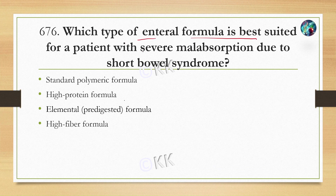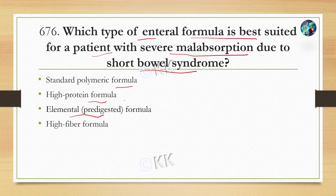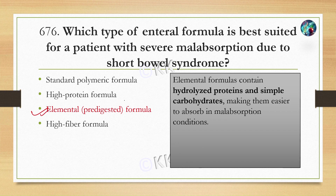Which type of enteral formula is best suited for a patient with severe malabsorption due to short bowel syndrome? Option A, standard polymeric formula. Option B, high protein formula. Option C, elemental pre-digested formula. Option D, high fiber formula. Correct option है elemental pre-digested formula। Pre-digested formula जैसे MLS, amylopectin — इसमें hydrolyzed protein और simple carbohydrates होते हैं, जिससे absorption easy हो जाता है।